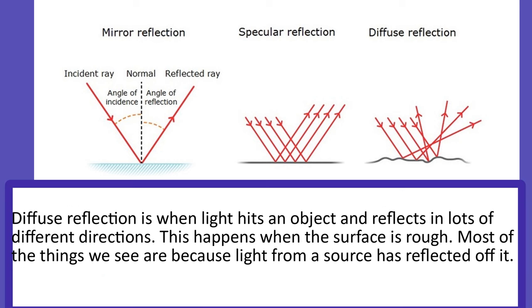Diffuse reflection is when light hits an object and reflects in lots of different directions. This happens when the surface is rough. Most of the things we see are because light from a source has reflected off it.